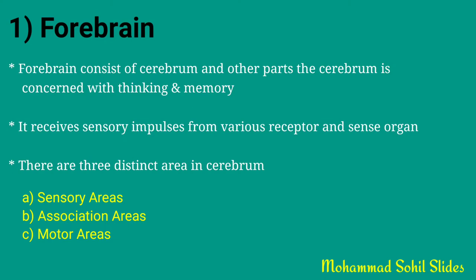The sensory area contains special areas for smell, hearing, vision, etc. The association area is for associating the information received through the sense organs and the message to be sent for action. The motor area looks after the response and action to be taken by the body, and controls the movement of voluntary muscles.